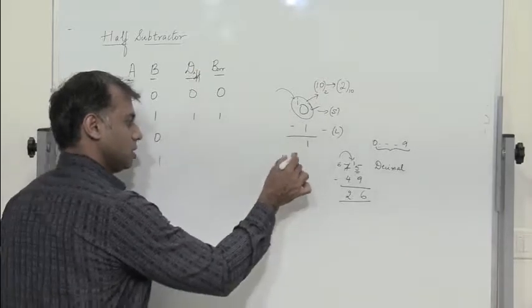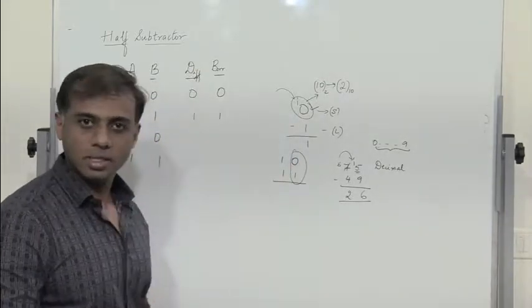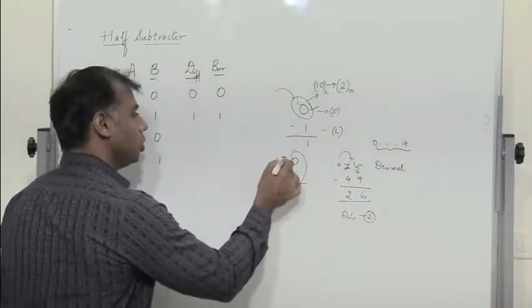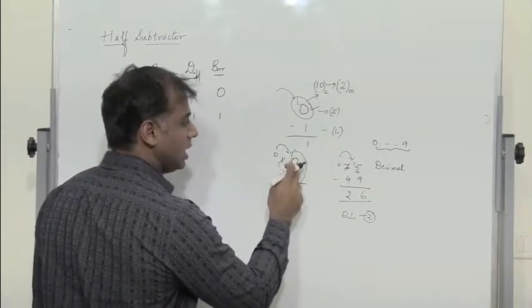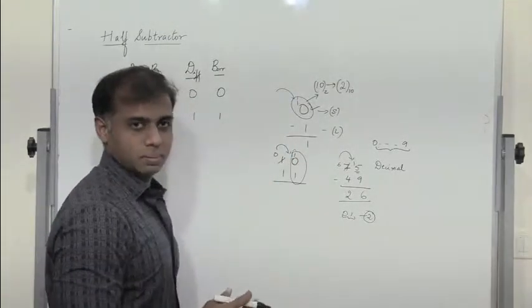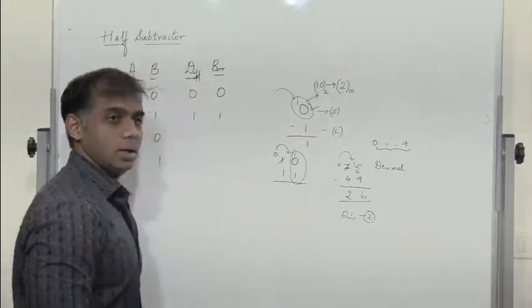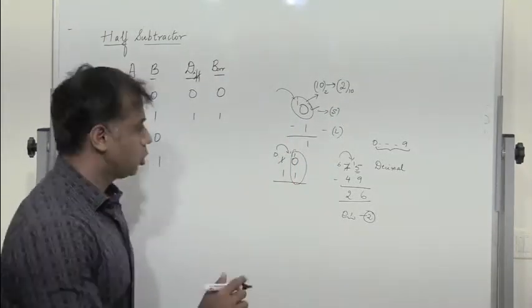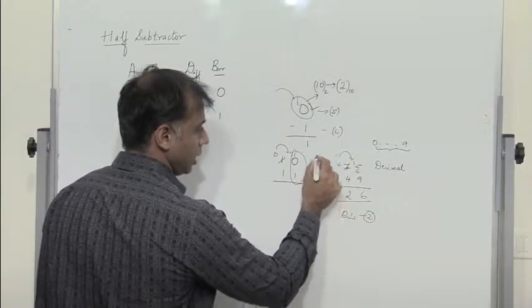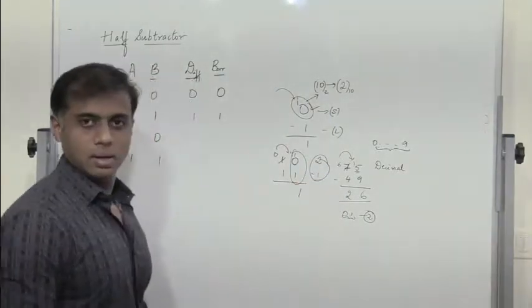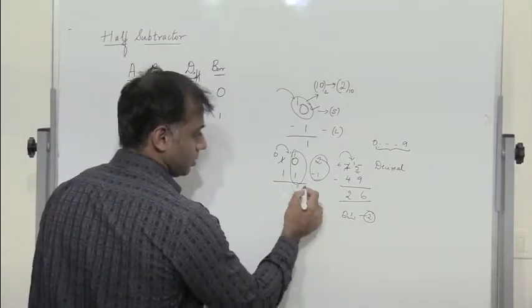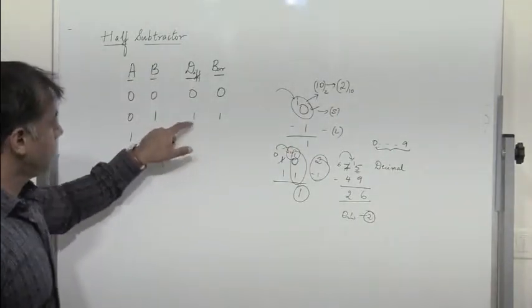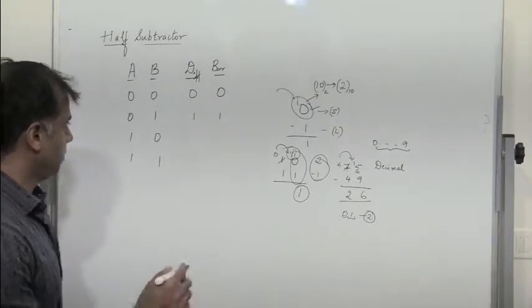Similarly in binary subtraction, since there are only 2 digits — 0 and 1 — when we borrow 1, we are basically adding 2 to this number. So it becomes 1-0 in binary, which equals 2 in decimal. So 1-0 in binary minus 1 is equivalent to 2 minus 1 in decimal, which gives us 1. So the difference is 1 and borrow is 1. So 0 minus 1 gives us difference 1, borrow 1.